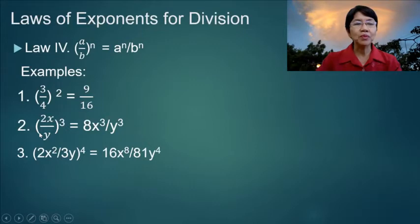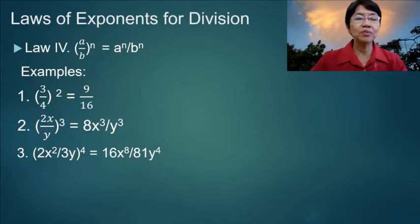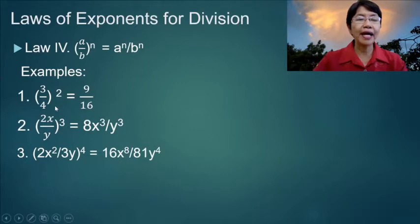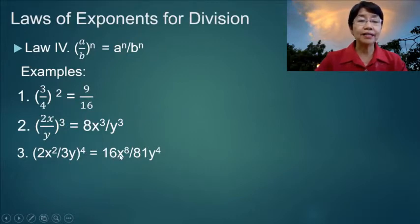Number 2: we have 2x over y raised to the third power is equal to 8x cubed over y cubed, where we raise 2x to the third power and we raise y to the third power. And number 3: 2x squared over 3y, quantity raised to the fourth, is equal to 16x to the eighth over 81y to the fourth.